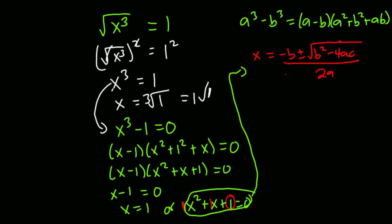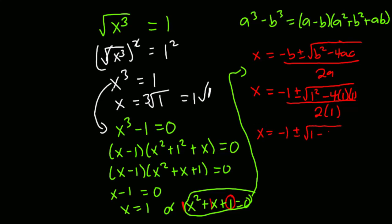Here, b is the coefficient of x which is 1, a is the coefficient of x squared which is 1, and c is the constant which is also 1. Substituting into the formula: x equals negative 1 plus or minus the square root of 1 squared minus 4 times 1 times 1, all divided by 2 times 1. This gives negative 1 plus or minus the square root of 1 minus 4, which equals the square root of negative 3, divided by 2.